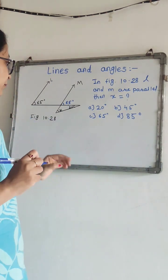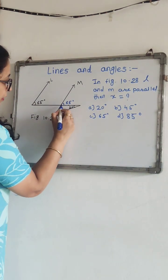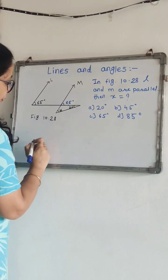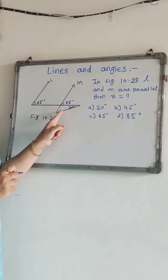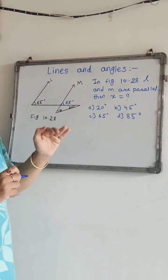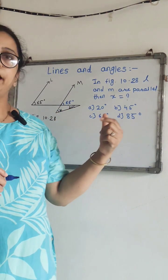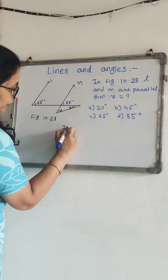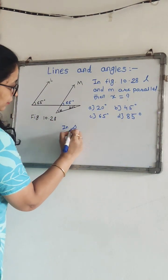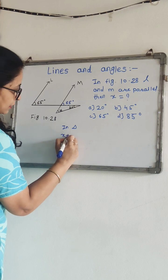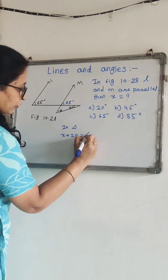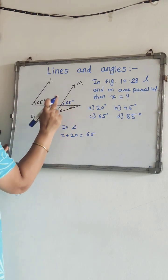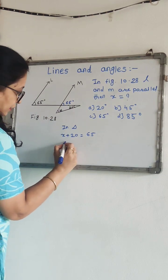In a triangle, the sum of the interior angles is equal to the exterior angle. So in the triangle, X plus 20 is equal to 65, because the sum of the interior angles equals the exterior angle.